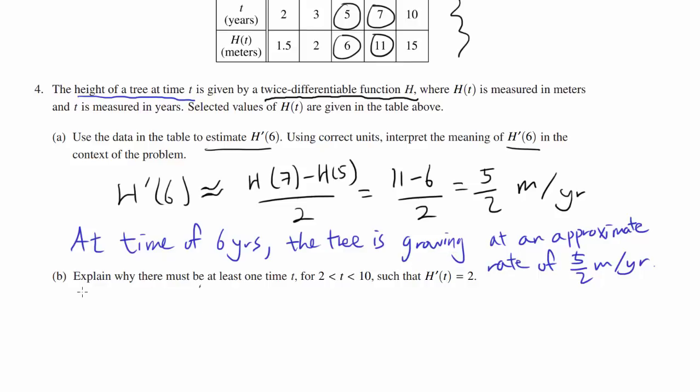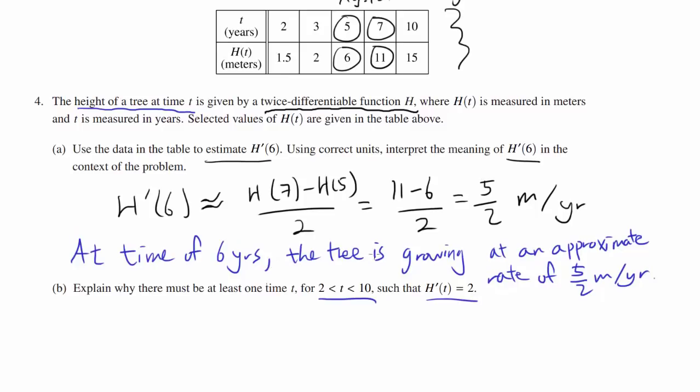Let's go on to part B. Explain why there must be at least one time t for t between 2 and 10, such that H'(t) = 2. So the first thing I think of when I see this is the Mean Value Theorem, because we are trying to prove the existence of some point in the open interval such that when you differentiate H with respect to time at that point, we get 2.